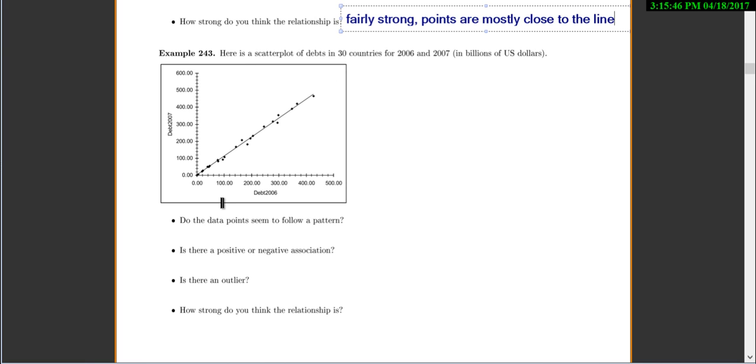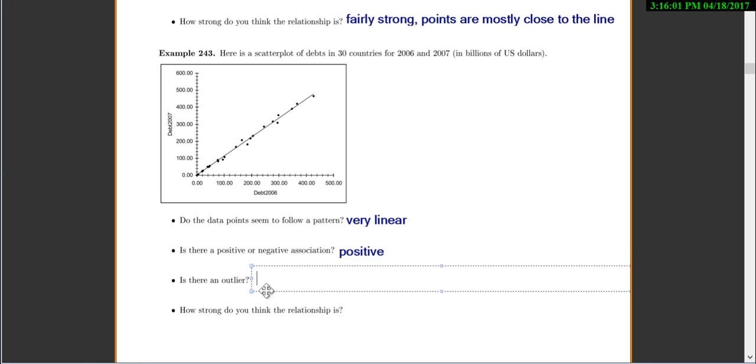Now let's try another one. So here's our scatterplot of debts. Do the points seem to follow a pattern? Well, it seems very, very linear. And it's still a positive association because we're still going up as we move to the right. And I would say there are no outliers. Those points are all so close to the line. Definitely no outliers. And how strong do you think the relationship is? I would say very, very strong. Those points are all very close to the line.